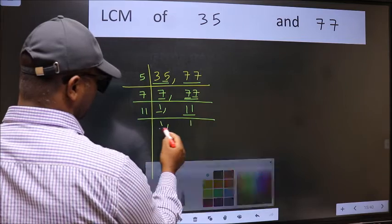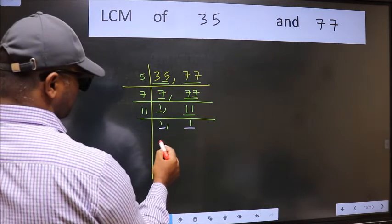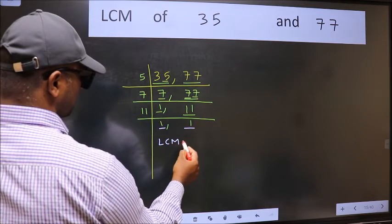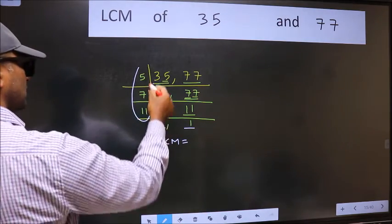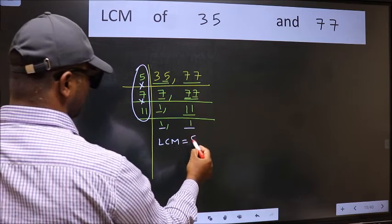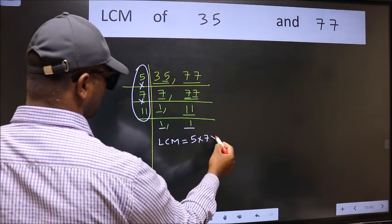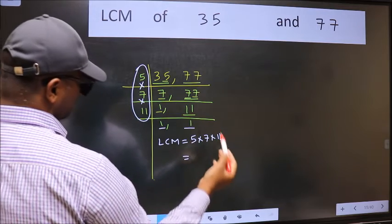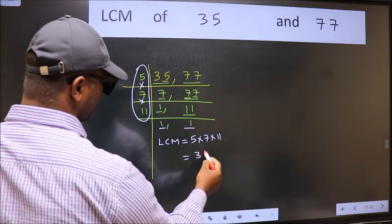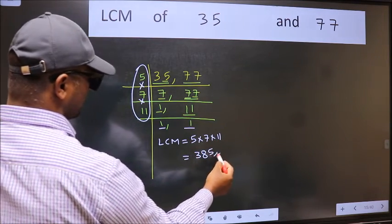We got 1 in both places. So our LCM is the product of these numbers: 5 times 7 times 11. When we multiply these numbers, we get 385 as our LCM.